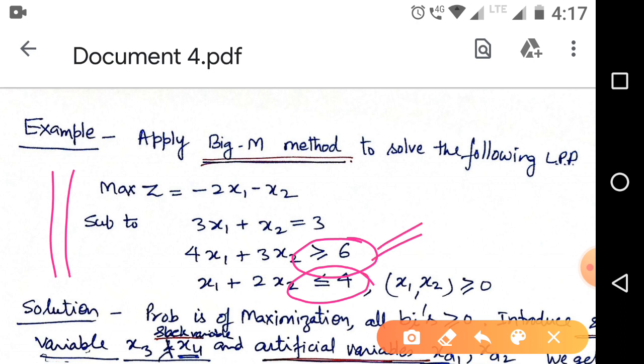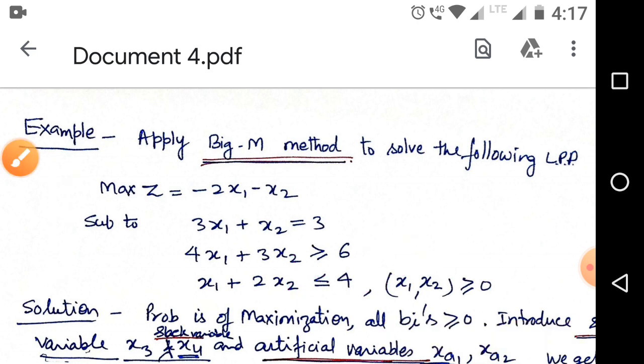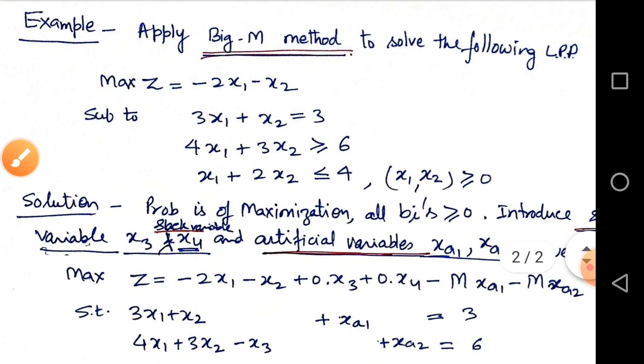For greater than equal to sign, we need a surplus variable x3, and for less than equal to constraint, we need a slack variable x4.